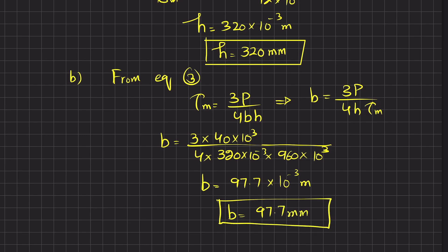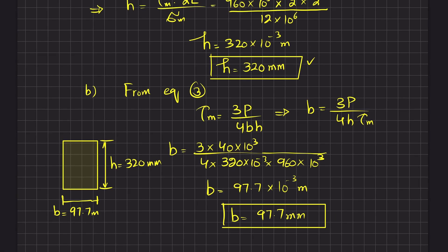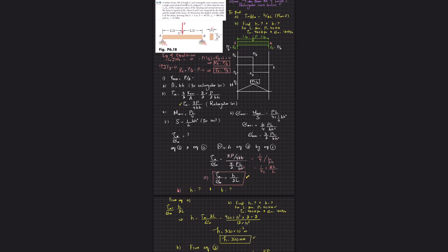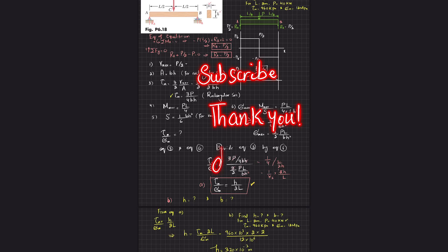So for this rectangular cross-section, the width B = 97.7 mm and the height or depth H = 320 mm. This was all about problem 6.18. If you have any questions, ask in the comment section. Please subscribe and press the bell icon for notifications. Thank you for watching.